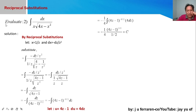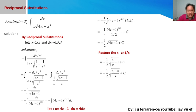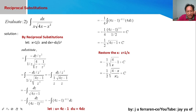To express our final answer in terms of the original variable x, we replace z with 1/x. The result becomes negative one-half times the square root of (4/x − 1). Since we have a fraction, we combine with −1 using x as the LCD, giving us the square root of (4 − x)/x.